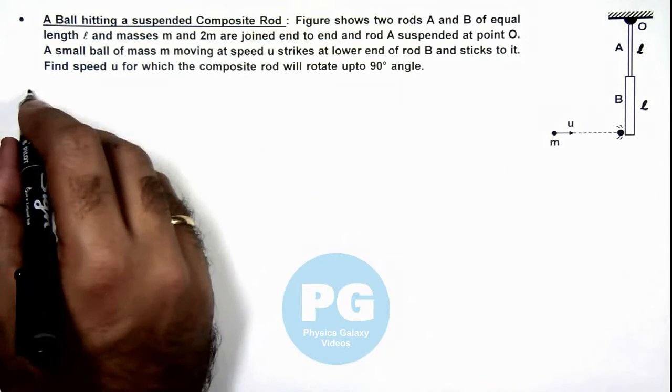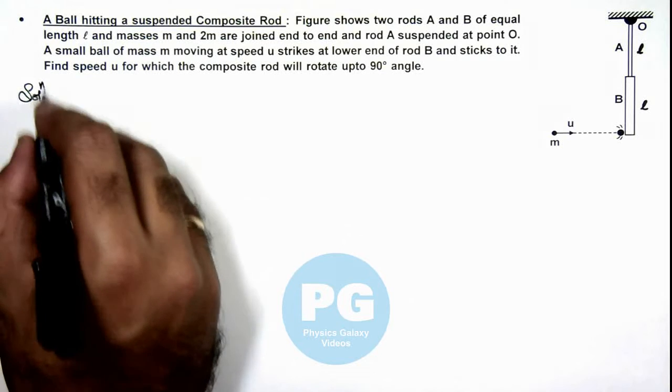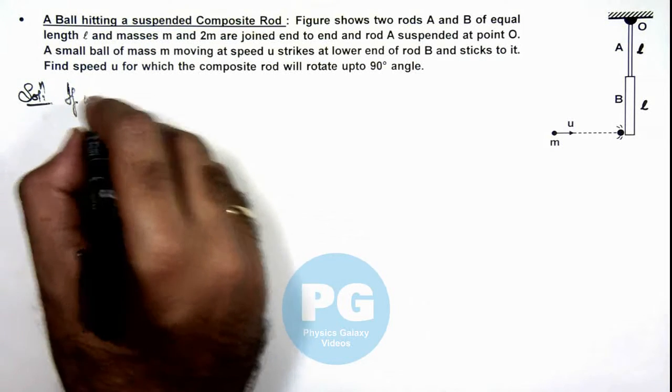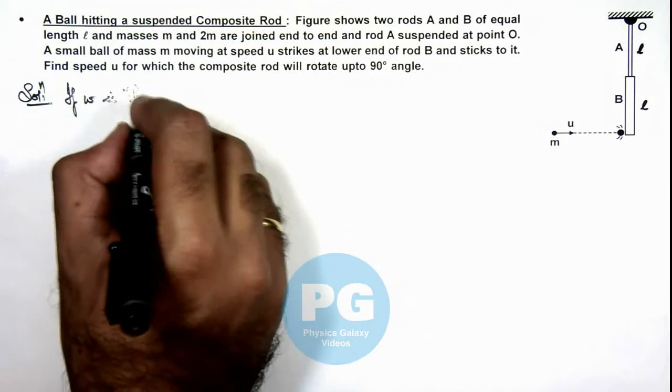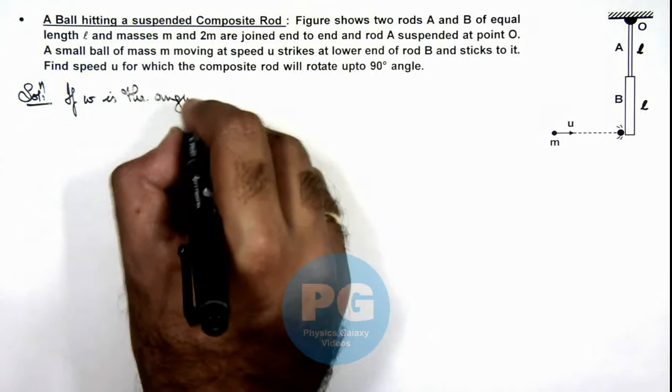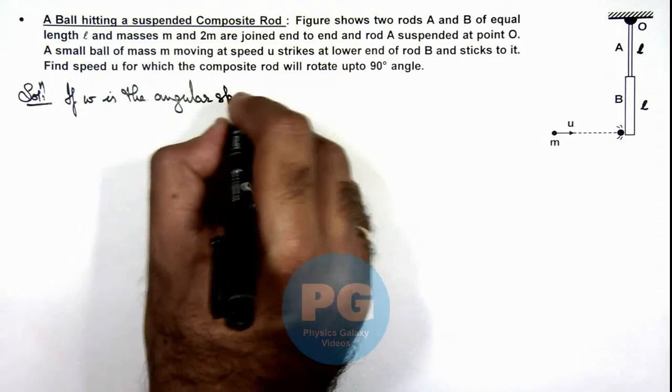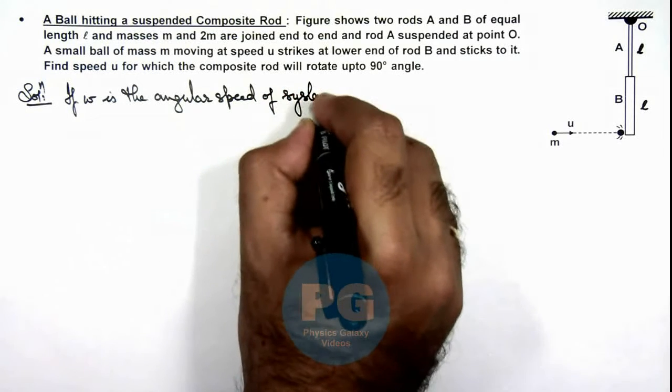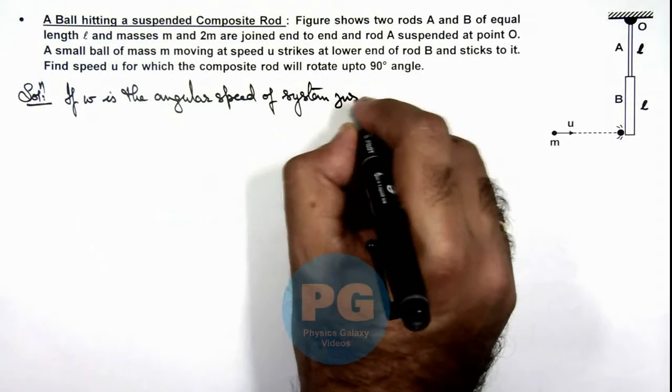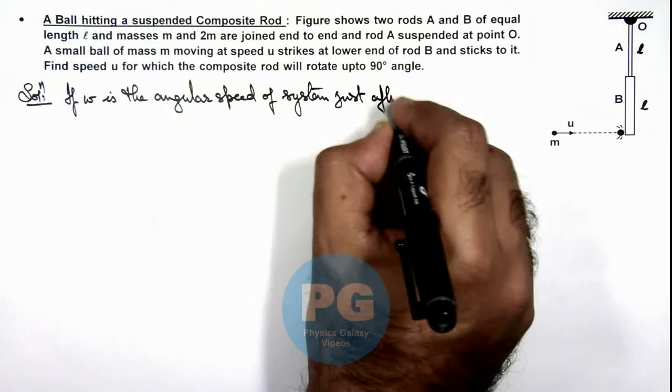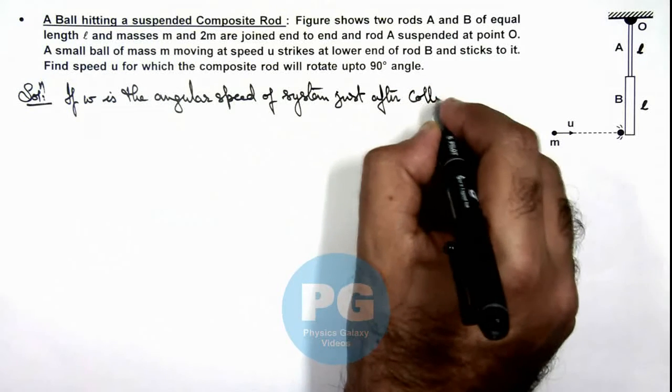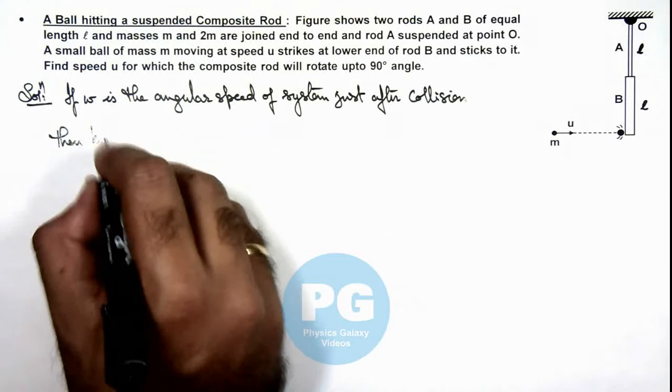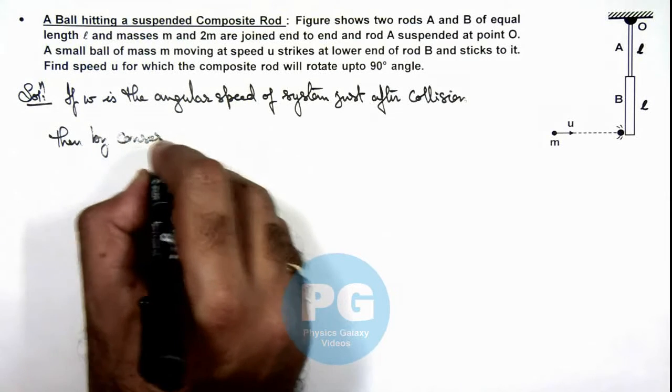So in this situation, if omega is the angular speed of the system just after collision, then by conservation of angular momentum,